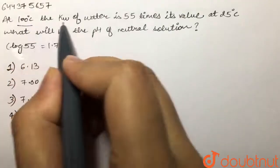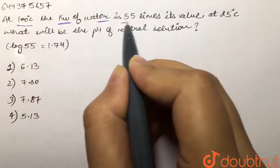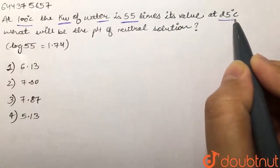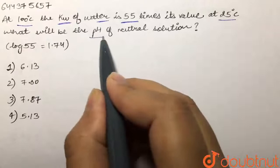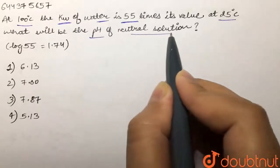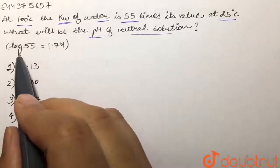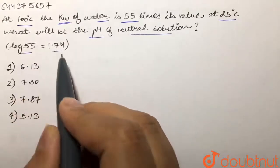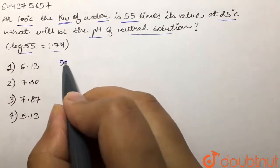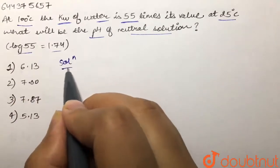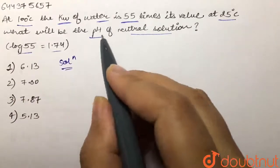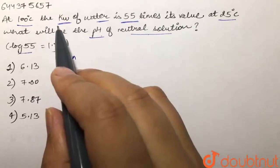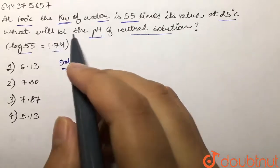Our question is: at 100 degrees Celsius, the Kw of water is 55 times its value at 25 degrees Celsius. What will be the pH of the neutral solution? The value of log 55 is given as 1.74. We are given four options and we are supposed to find out the pH of the neutral solution.